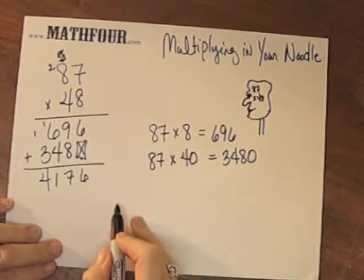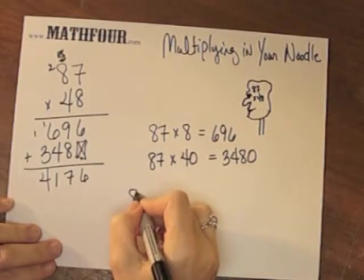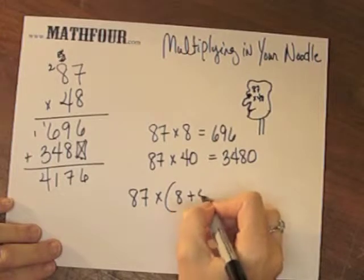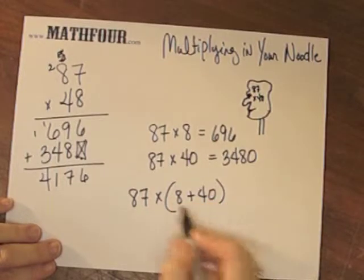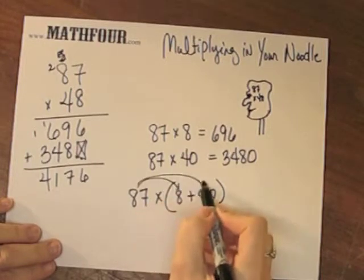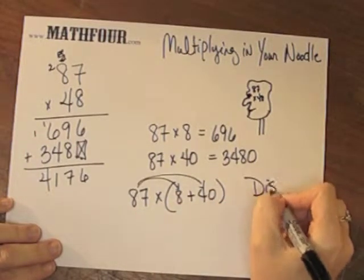Well, that's what a 0 is. So this is actually 87 times 8 plus 40. Well, 8 plus 40 is 48. So we used the distributive property.